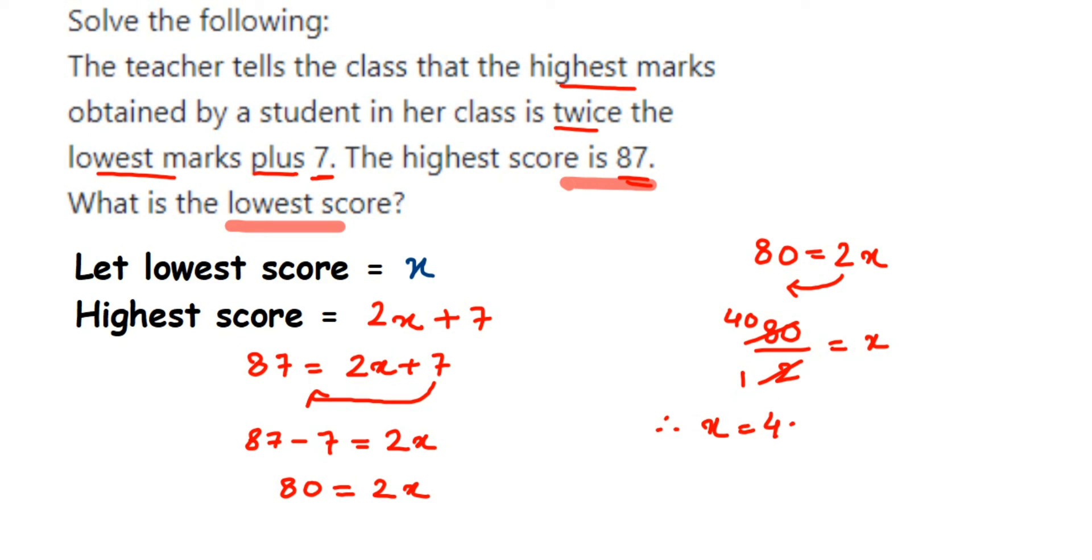Which means the lowest score is equal to 40. So therefore, the lowest mark or the lowest score is equal to 40. I hope this question is clear. In case you have any other question or doubt, you can drop a comment. Thank you so much for watching.